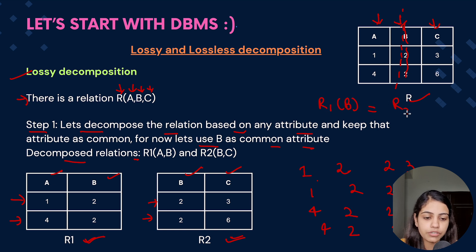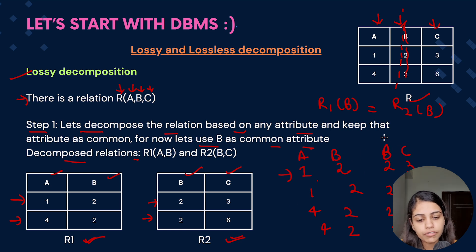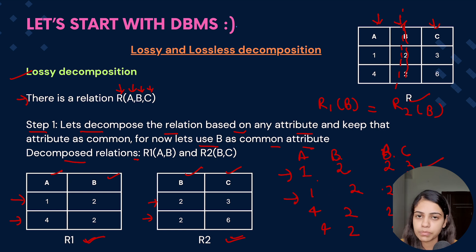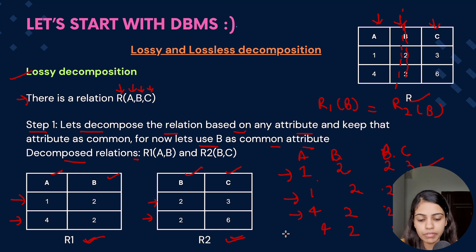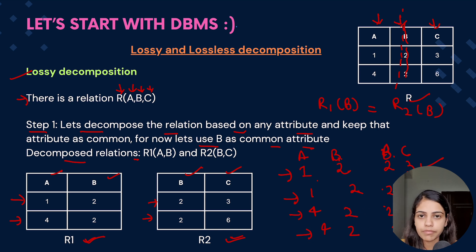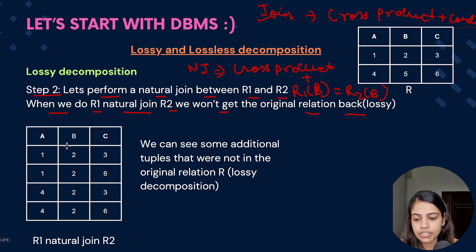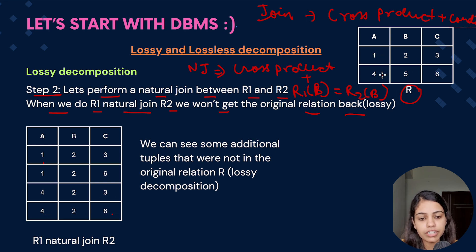We note down the values: (1,2) cross with (2,3) and (2,6); then (4,2) cross with (2,3) and (4,2) cross with (2,6). We follow the condition that R1.B should equal R2.B. Checking each row: (1,2,2,3) — R1.B equals R2.B, yes; (1,2,2,6) — yes; (4,2,2,3) — yes; (4,2,2,6) — yes. So the final relation after the join is: (1,2,3), (1,2,6), (4,2,3), and (4,2,6).